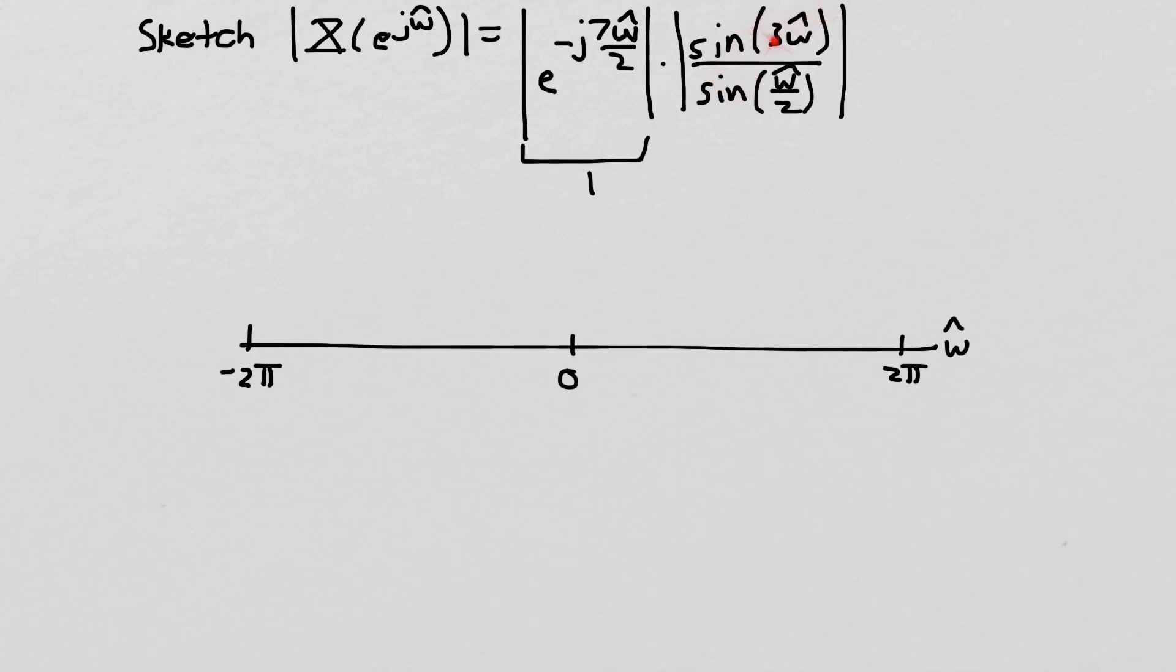We notice we have a sinusoid on the top, a sine on the top, and a sine in the denominator. The sine on the top has a higher frequency, so it oscillates more quickly. The sine on the bottom oscillates more slowly. We know from experience, from looking at other similar responses like this, that this looks like what we would call a discrete time sinc. It's of the form sine over sine, another form of a sync function. It's not just sine x over x, it's sine something over something. But we know kind of what that looks like from our experience, but we want to figure out what this specific one looks like.